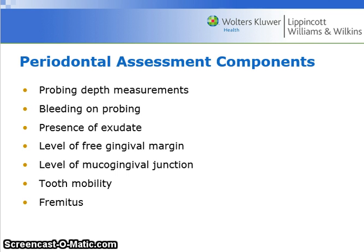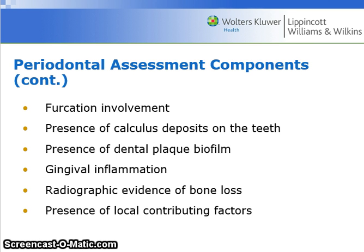An intensive clinical periodontal assessment is used to gather information about the periodontium on patients who score high on the PSR. Periodontal assessment components include probing depth measurements, bleeding on probing, presence of exudate, level of free gingival margin, level of mucogingival junction, tooth mobility, and fremitus. It also includes furcation involvements, presence of calculus deposits, presence of dental plaque biofilm, gingival inflammation, radiographic evidence of bone loss, and presence of local contributing factors.